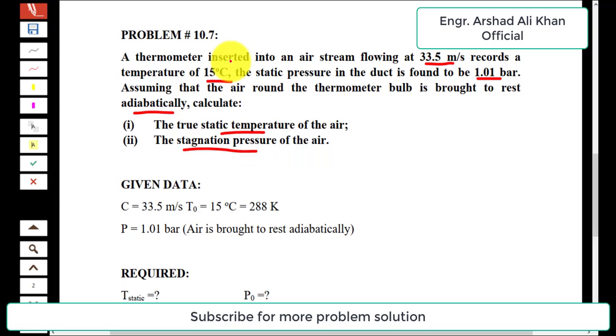First, we will write the given data extracted from this statement. The stream velocity C is 33.5 meters per second. The stagnation temperature is 15 degrees Celsius, which converts to 288 Kelvin. The static pressure in the duct is P = 1.01 bar. The air is brought to rest adiabatically.